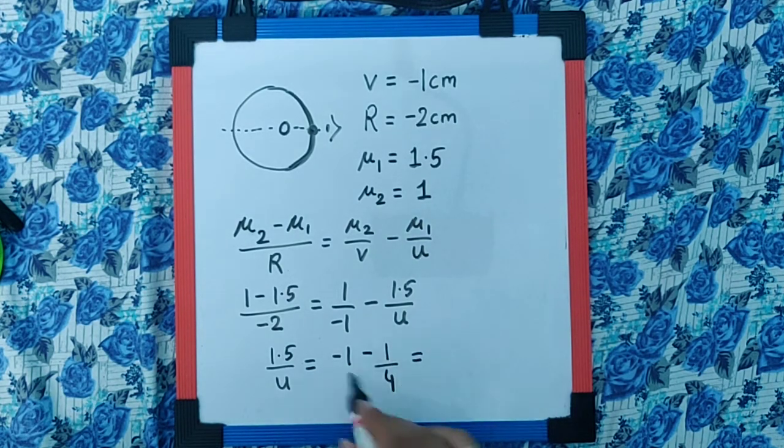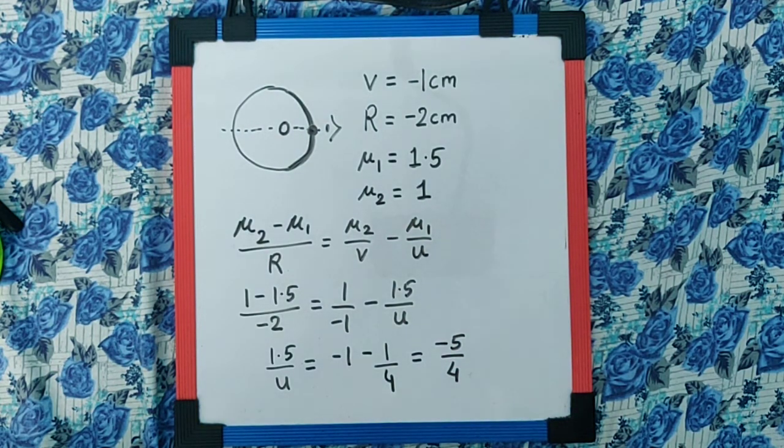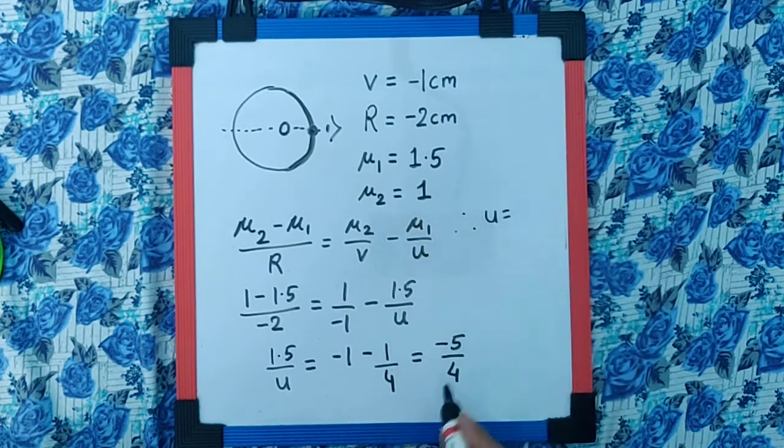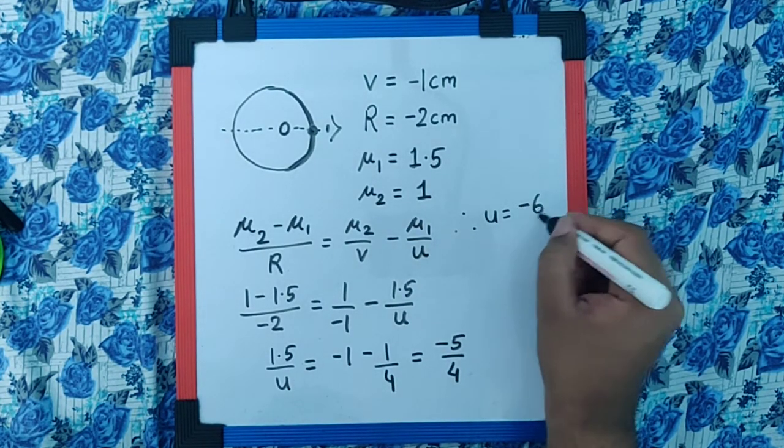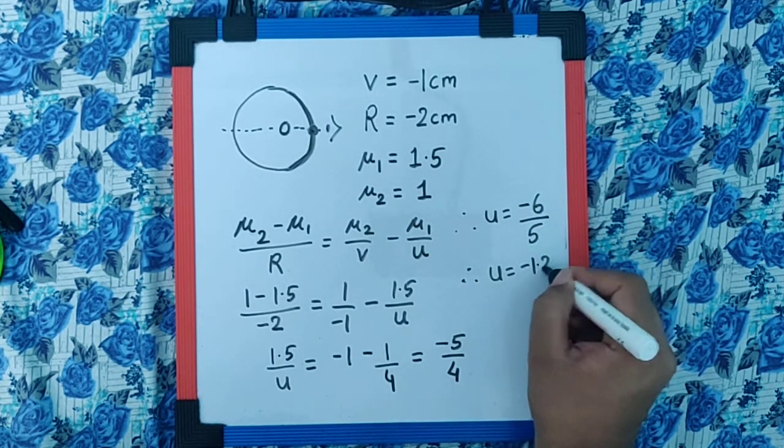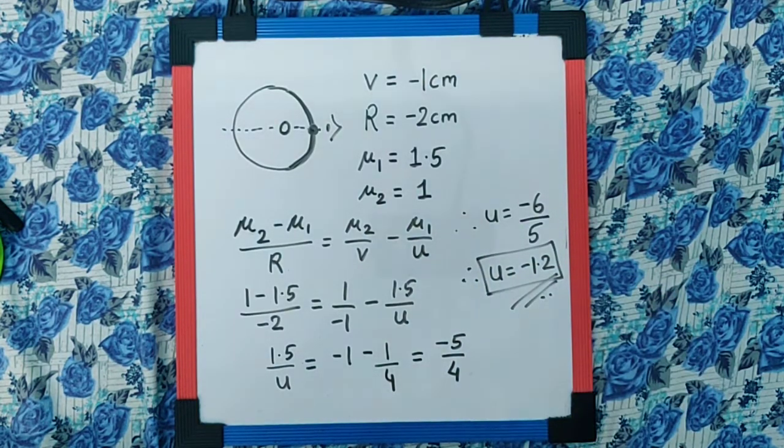So now if I rearrange this equation I get U as 4 into 1.5 which is 6 with a negative sign upon 5. And therefore U is minus 1.2. And that is the final answer.